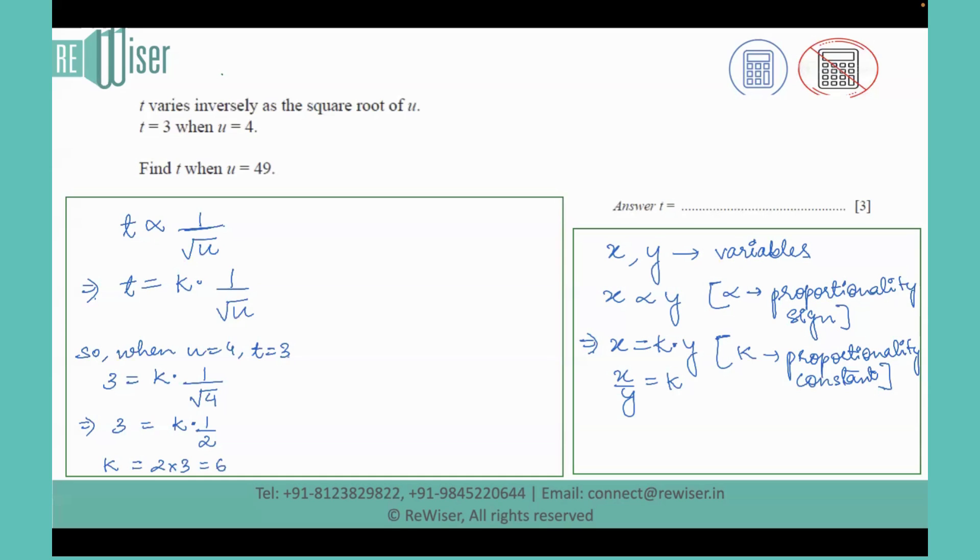So here after finding the value of k, which is 6, we'll substitute its value in the given relation which we have framed as an equation. Now I can say that t equals 6 times 1 over square root of u, and that is 49, and we can write this as 6 times 1 over 7, which is t equals 6 over 7, and that is the answer.